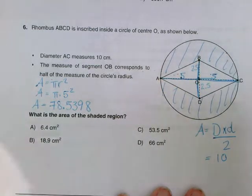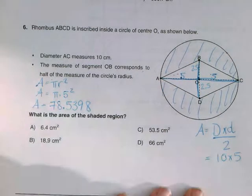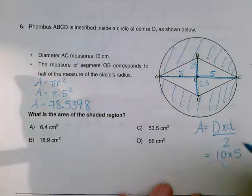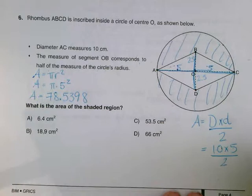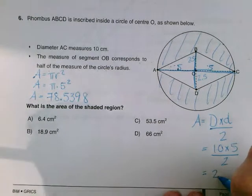Okay, so the other one is 2.5 and 2.5. So it's 5, so you're doing 10 times 5. And then at the end, you do divided by 2. So that would be 50. And then divided by 2 is 25.